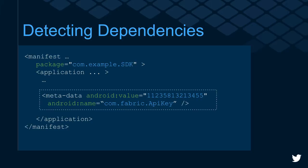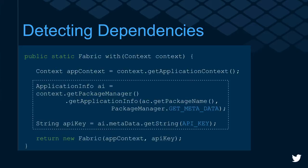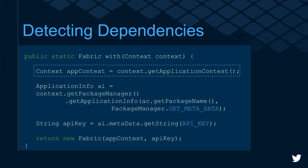Here's another example of easy integration. With Fabric you need to use an API key — a dependency to authenticate against our web services. Our approach is to provision the key through our IDE plugins and inject it into the Android manifest. During initialization we get the application info and retrieve the API key. We use the application context to prevent memory leaks that can be caused if you reference an activity that is being killed.